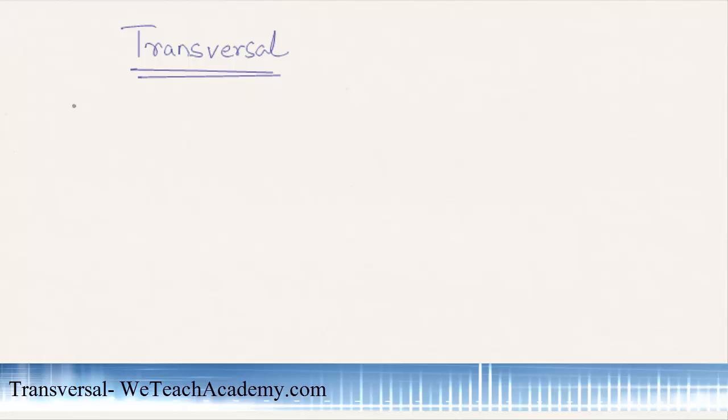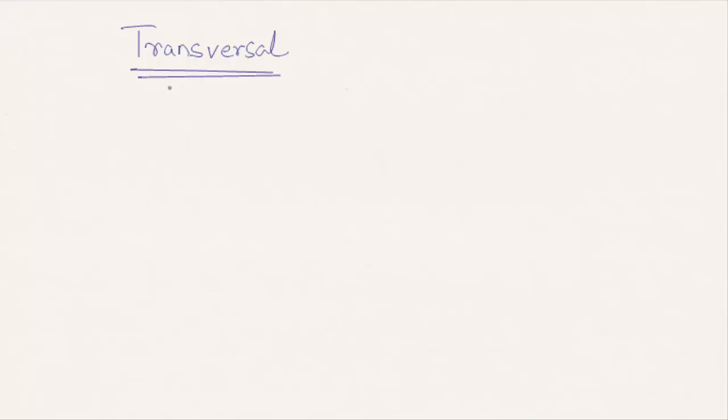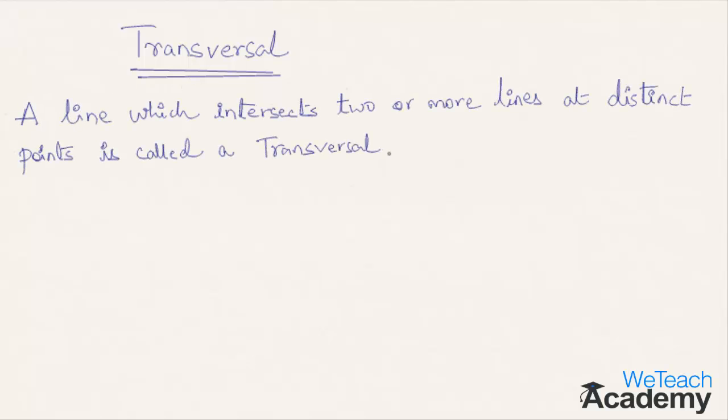Hey guys, welcome to WeTeachAcademy.com. In this presentation, we are going to discuss transversal. What is a transversal? A line which intersects two or more lines at distinct points is called a transversal.